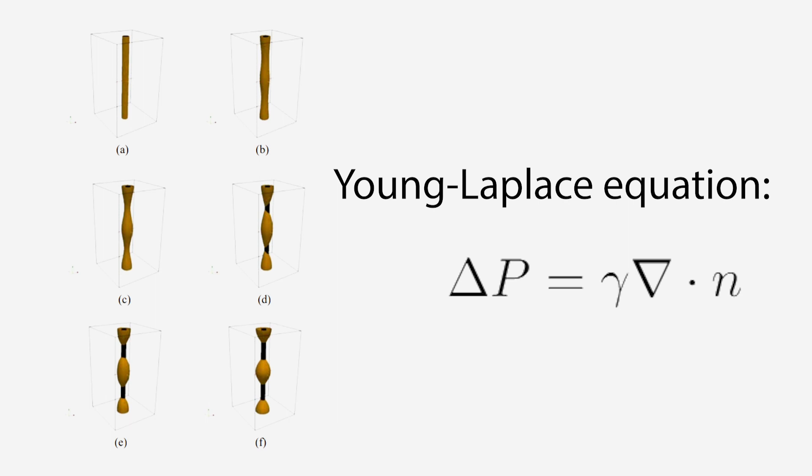This means that the more the jet is pinched, the higher the pressure becomes. As a result, the liquid travels from high to low pressure areas, from throats to peaks. The higher the surface tension is, the faster the droplets are formed, because the sharper the pressure gradient.